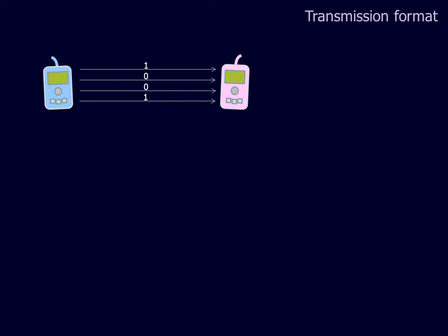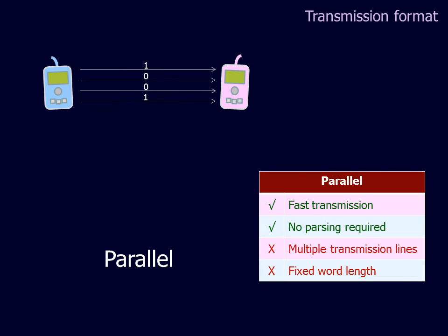The use of multiple transmission lines is called parallel transmission. Parallel transmission speeds up transmission, and if the number of lines matches the word length, no parsing is required at the receiver. However, there is a cost factor in using multiple lines, and parsing into words is still required if the number of lines does not match the word length.